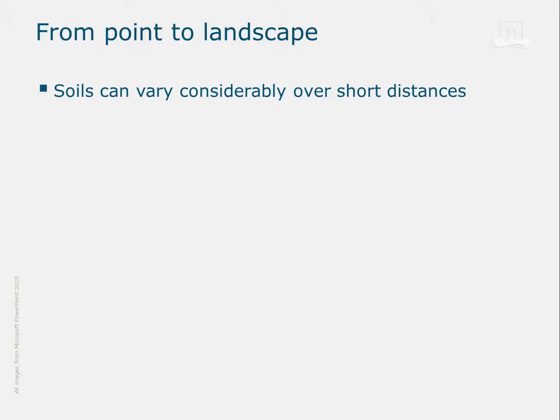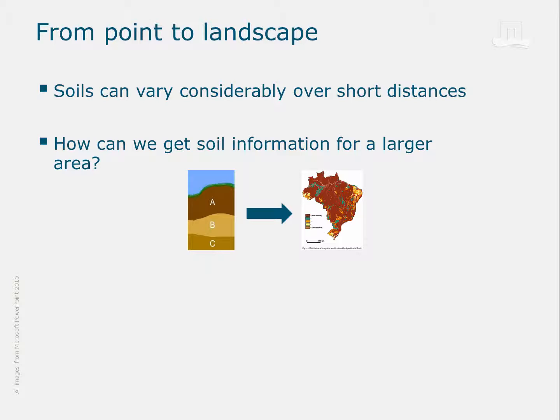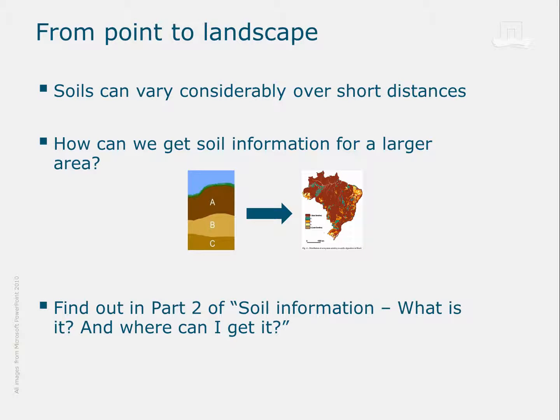One more point I want to make about point or profile information: it is very important to realize that soils can vary quite a lot over short distances. So how can we possibly get continuous soil information for a larger area and extrapolate from point to landscape level? That's what I'm going to show you in part two of this presentation. But now it's time to take a short break, move around a bit, and then tune right back in for the second part.